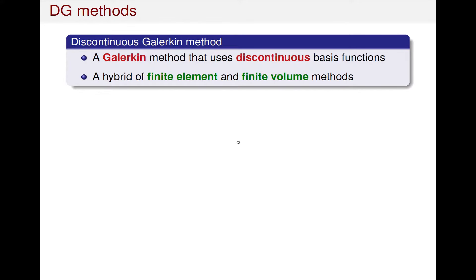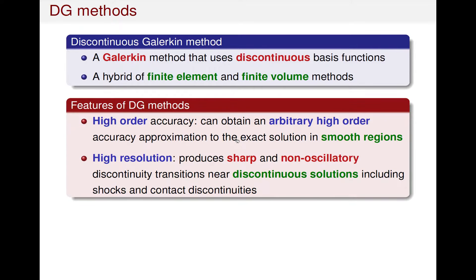The DG method is a Galerkin method that uses discontinuous space functions for both the test functions and the numerical solution. The DG method is also a hybrid of finite element and finite volume methods, taking advantage of both. There are two main features of the DG method. The first is high-order accuracy — we can obtain an arbitrarily high-order accuracy approximation to the exact solution in smooth regions. The second is high-resolution property, meaning the method can produce sharp and non-oscillatory discontinuity transitions near discontinuous solutions, including shocks and contact discontinuities.